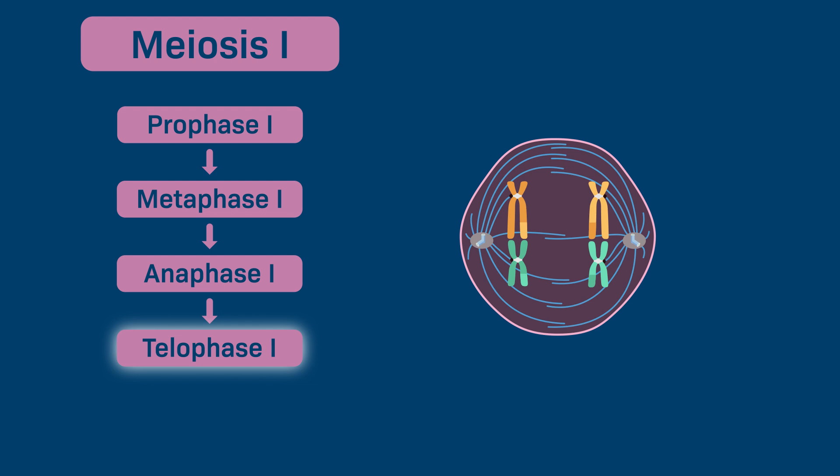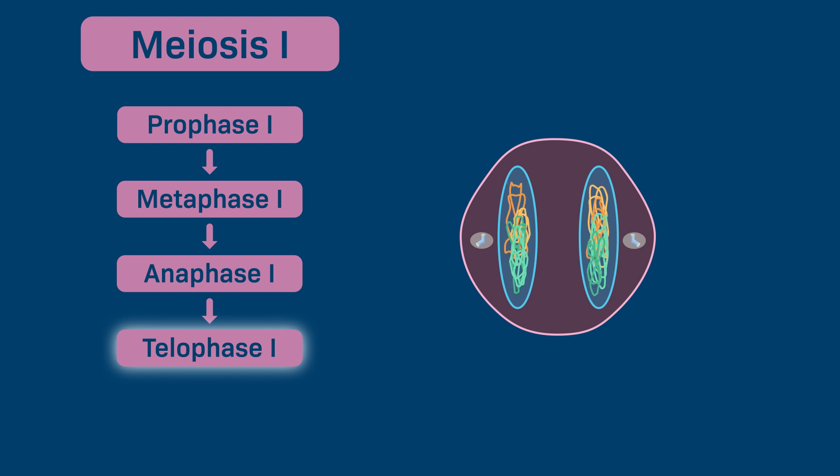During telophase I, the meiotic spindle breaks down. In some species, the nuclear envelope may briefly reappear to produce two separate nuclei, and the chromosomes may decondense. For simplicity, we're showing the chromosomes in their condensed state here.